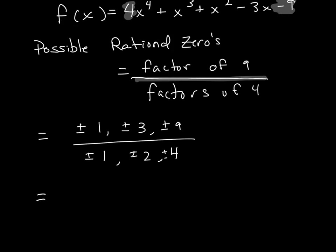What we're going to do is start off with 1 divided by 1, which gives us 1. Next up, I have 1 divided by 2, which gives us 1 half. The next one, I have 1 divided by 4, which gives us plus or minus 1 fourth. So I did all of the fractions that could have a numerator of 1. Now I'm going to use 3 as the numerator for all of them. So now I have 3 over 1, which is plus or minus 3.